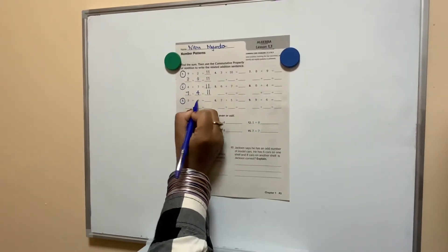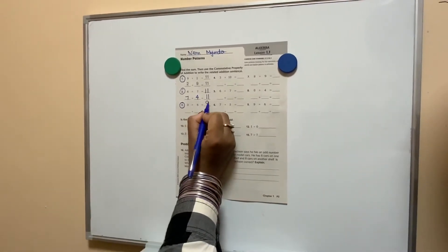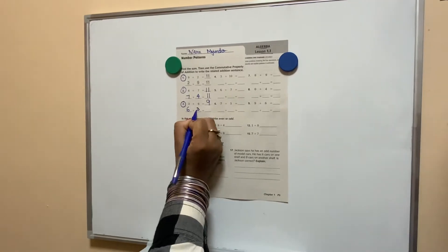Question number 3. 3 plus 6 is? 9. So, 6 plus 3 is? 9.